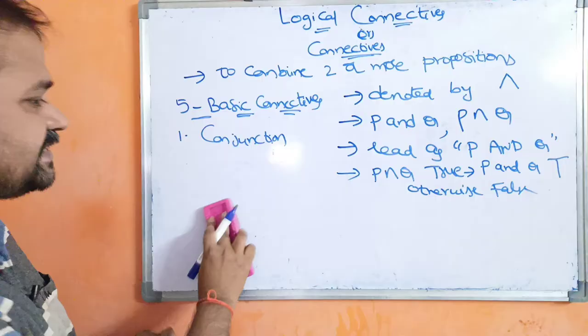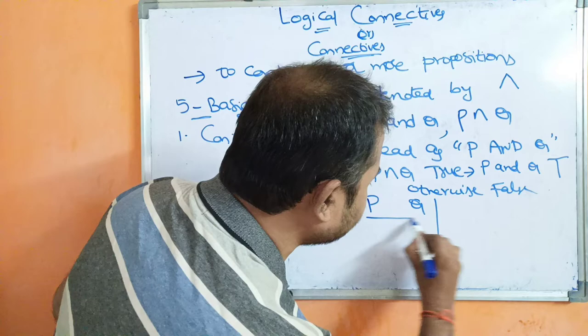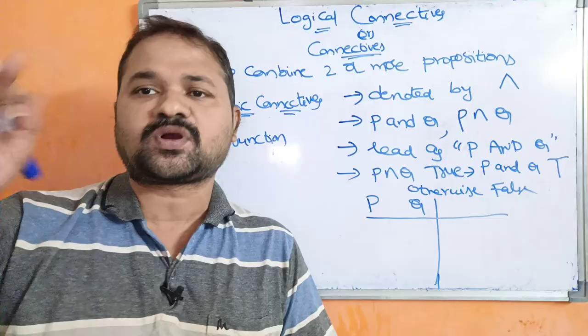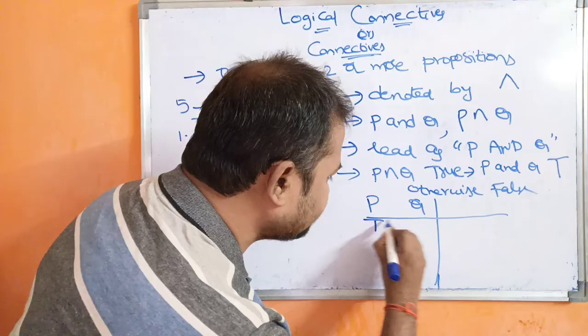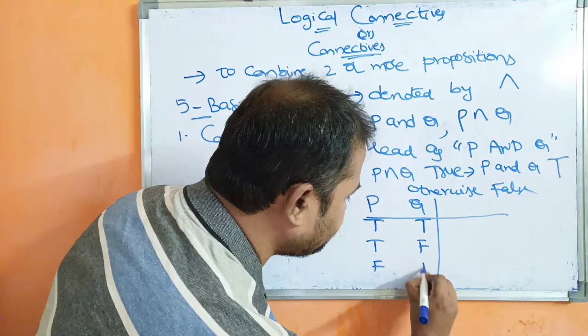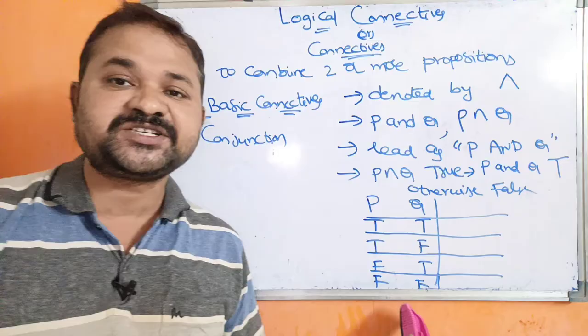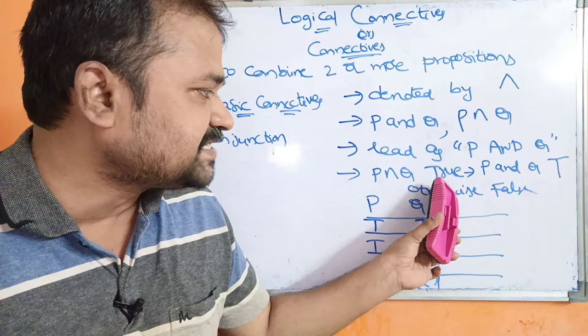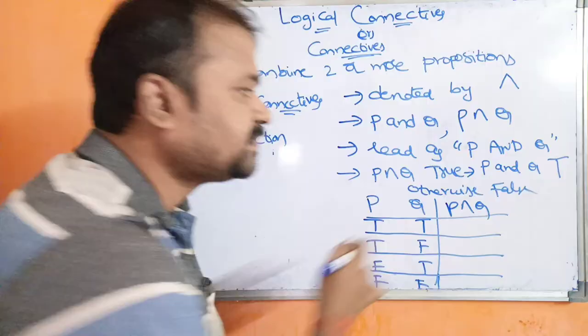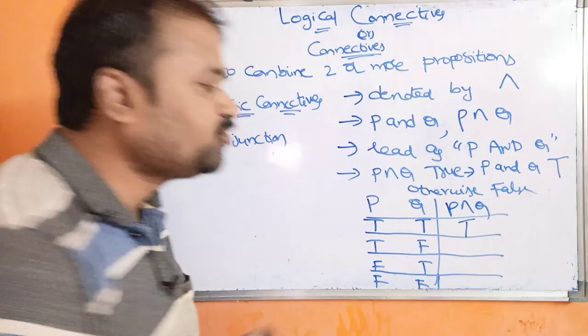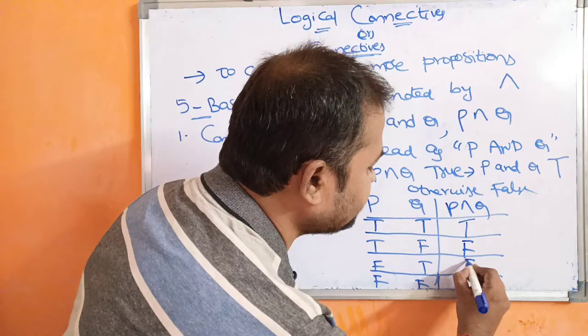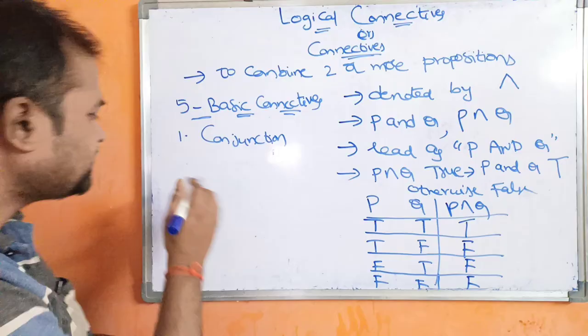Let us see the truth table for conjunction. We have two propositions P and Q, so 2² = 4 combinations are possible. The combinations are: true-true, true-false, false-true, and false-false. P ∧ Q is true only when both P and Q are true — that is, true-true gives true. True-false gives false, false-true gives false, and false-false gives false.